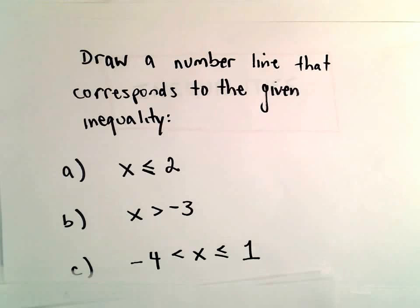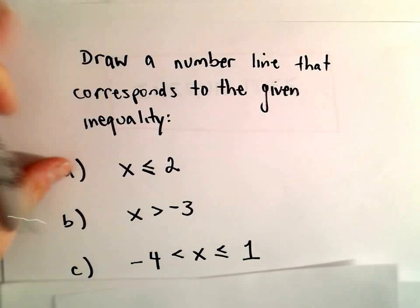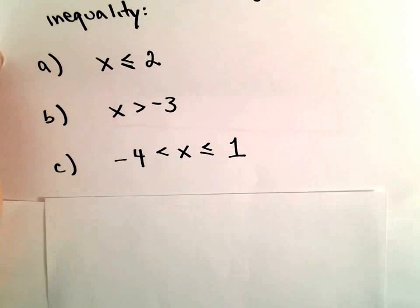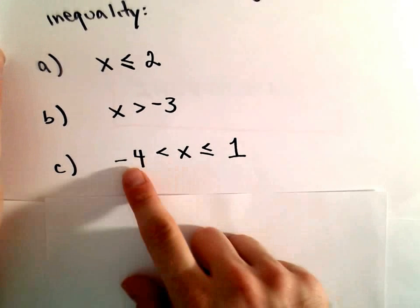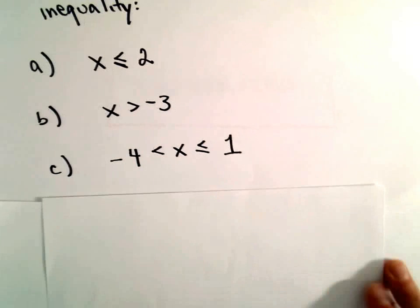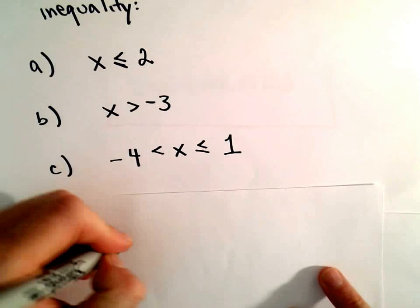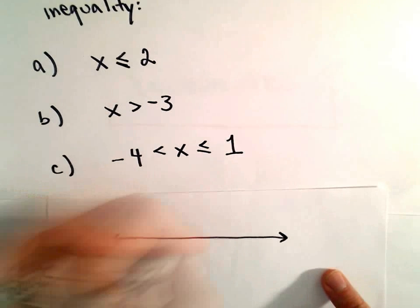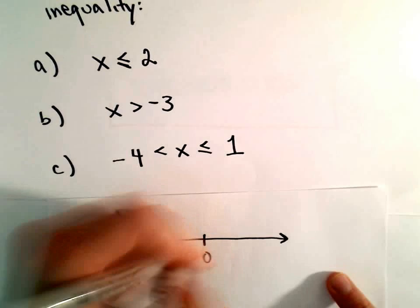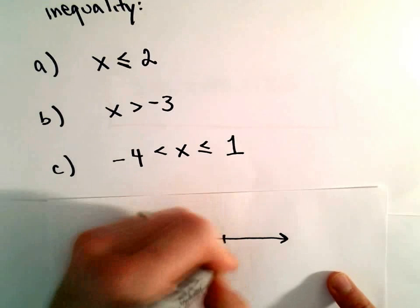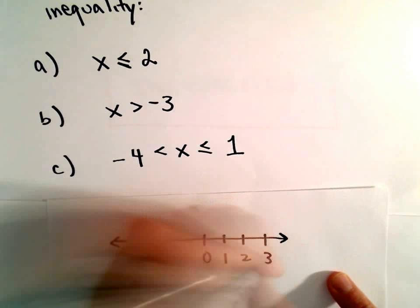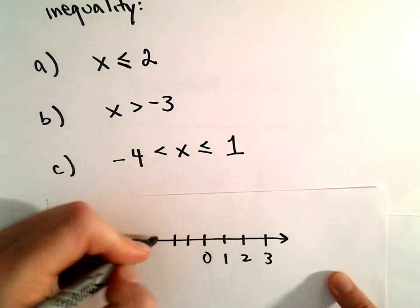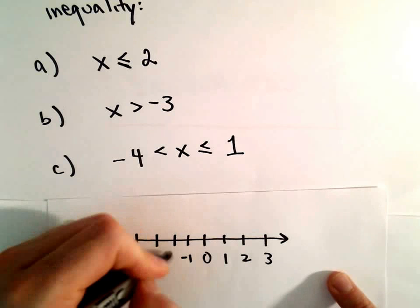Lastly, in Part C, it says we need to shade the interval of numbers that's greater than negative 4 but less than or equal to positive 1. So: 0, 1, 2, 3, negative 1, negative 2, negative 3, negative 4.